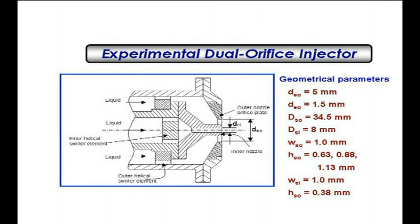We went through this work — Shiv Kumar was my student at that point of time, working with me. We were trying to look at creating a spray: you have an annular flow and a core flow, you give swirl to both of them, so both the primary and the secondary have swirl, and they create a mixed spray downstream.